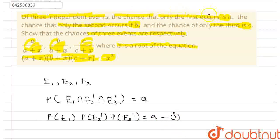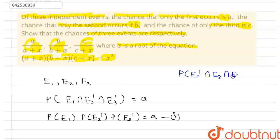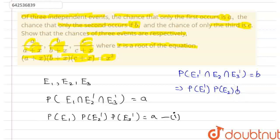Also, in the question, it is given that the chance that only the second one occurs is B — that is, probability of E1 complement intersection E2 intersection E3 complement equals B. Since E1, E2 and E3 are independent events, this will be equal to probability of E1 complement into probability of E2 into probability of E3 complement, which equals B. Let us denote it as equation number 2.